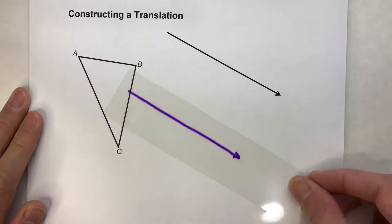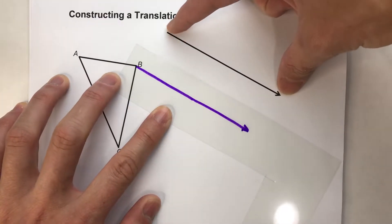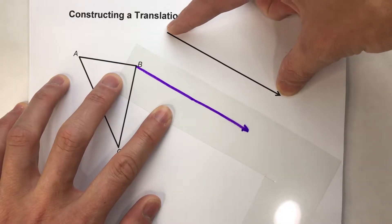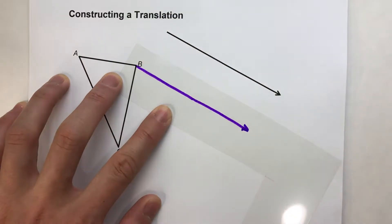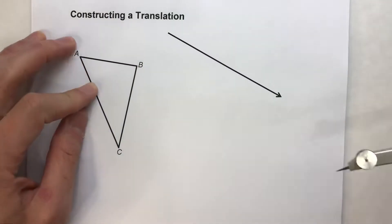Now, to construct this, we basically have to move this arrow, this vector, right here. So how are we going to do that? Well, let's talk about that.